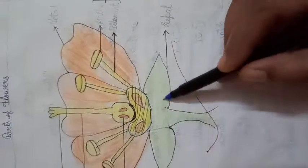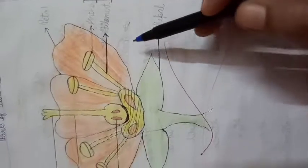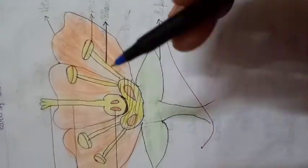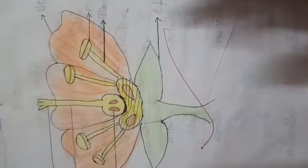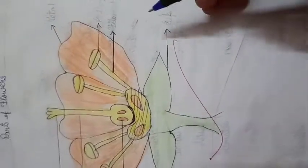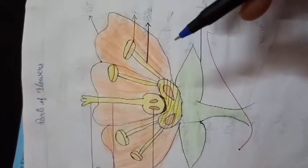So here, these parts you have to label. These green color part is called sepal. These all the parts I will show you in the next class through a flower.